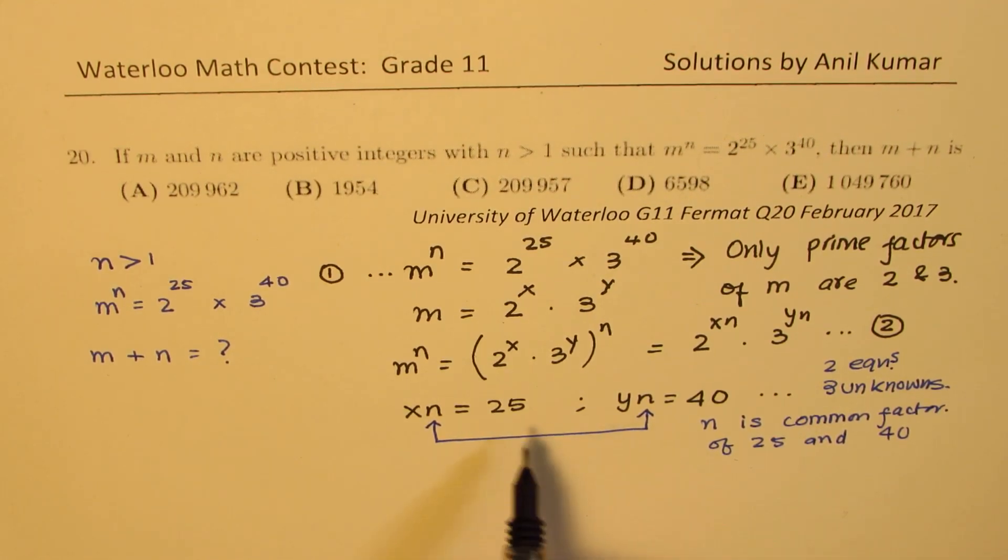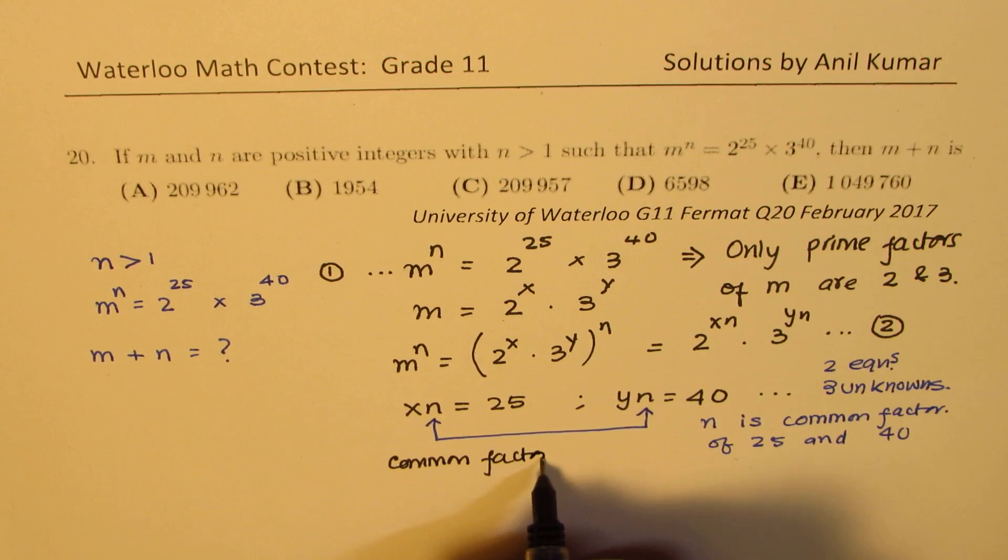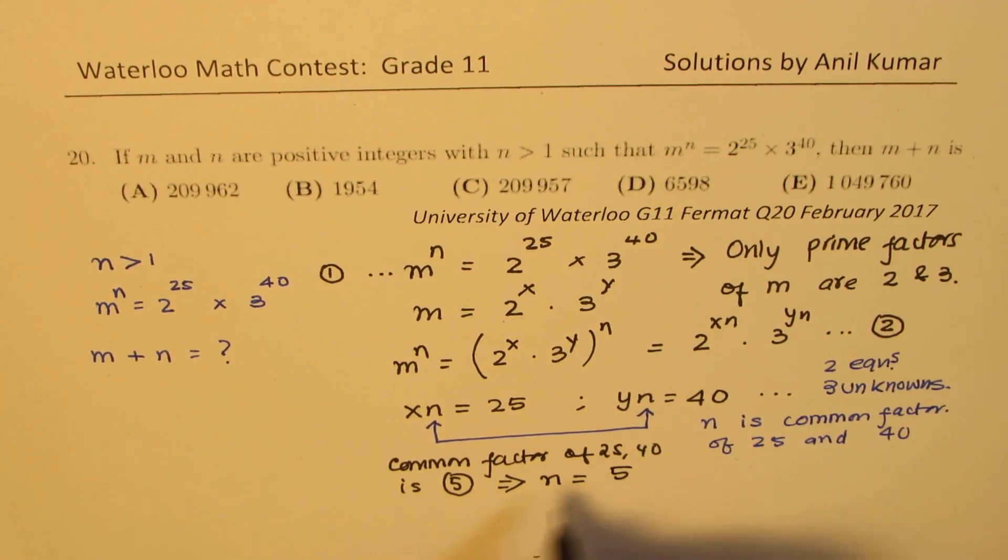So you know what is the common factor of 25 and 40? Well, we know that the common factor of 25 and 40 is 5. So that gives you the value of n. So n is 5 for us.